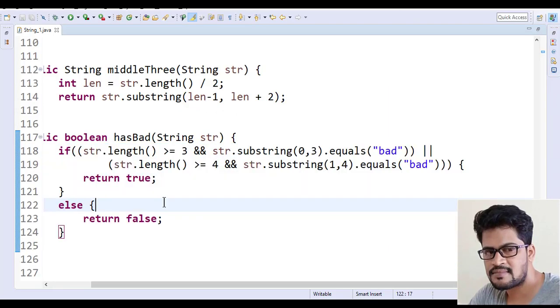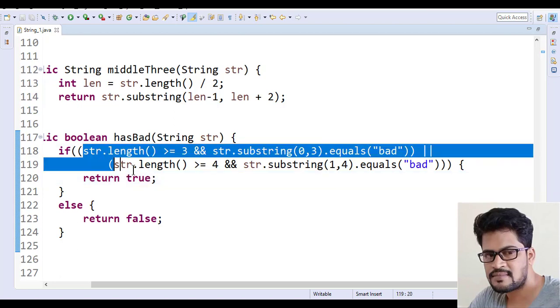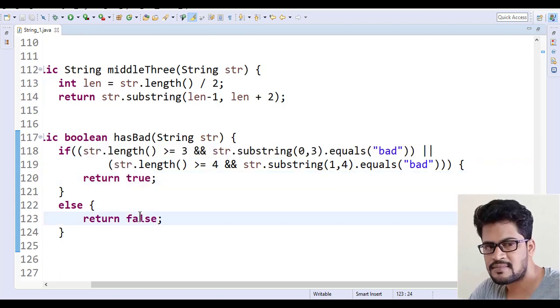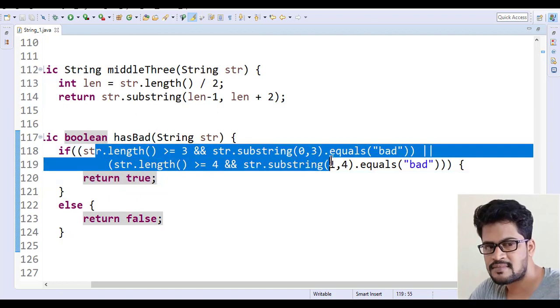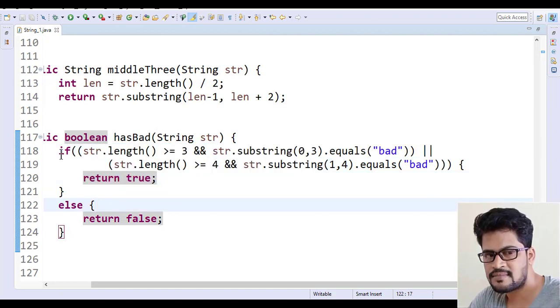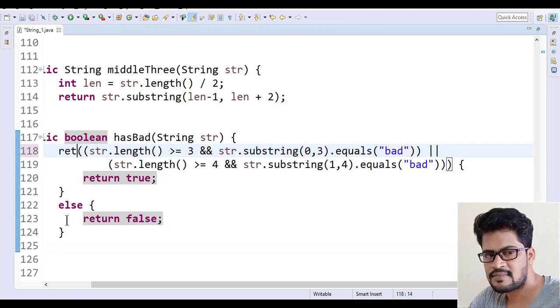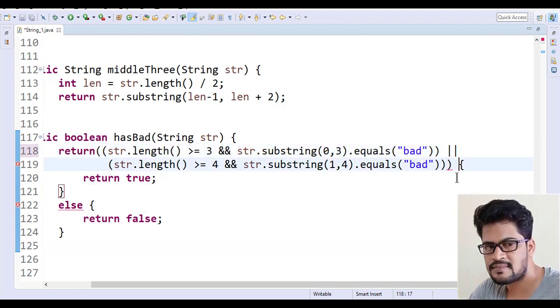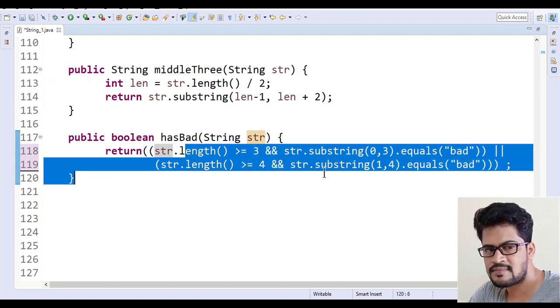One more thing: what we have done here is if the condition is success return true, if the condition fails return false. So ultimately we are just returning the condition itself. So why write these many lines? You can go for a shortcut and just simply return the logic.